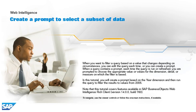When you want to filter a query based on a value that changes depending on circumstances, you can edit the query each time, or you can create a prompt. When a query contains a prompt, each time the query is run or refreshed, you are prompted to choose the appropriate value or values for the dimension, detail, or measure on which the filter is based.